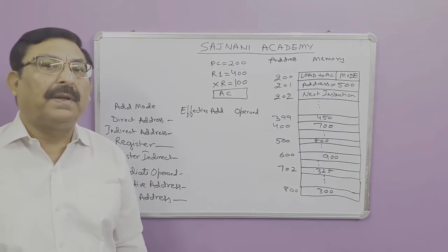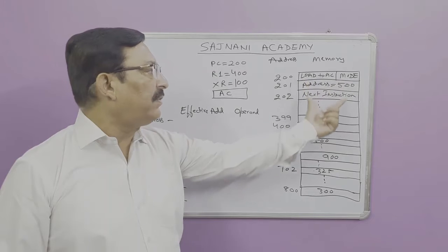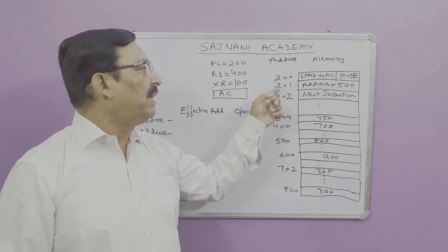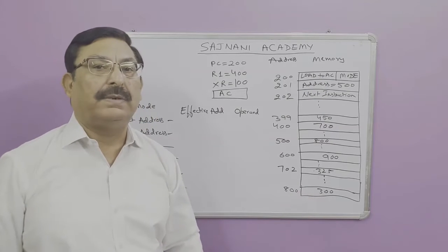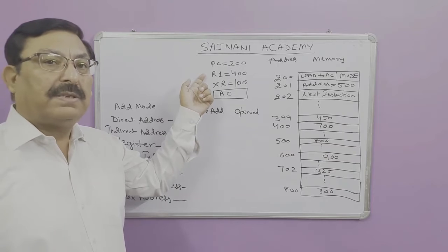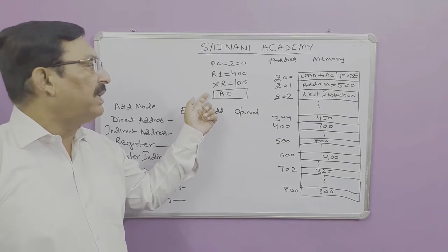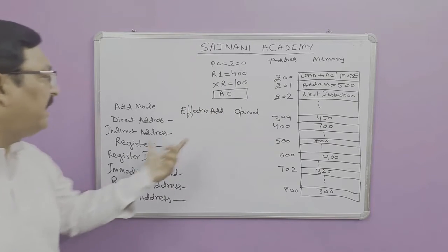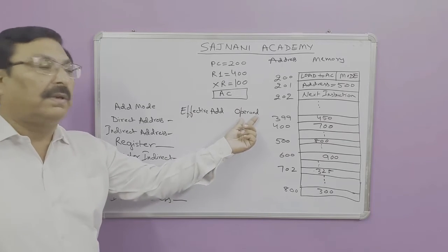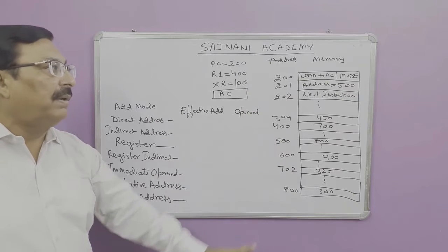Let us continue with this example from the book. You are given a memory map where the contents of each memory location are provided. Corresponding to address 200 there is 'load AC', mode 201 address 500, and similarly all other locations are mentioned. The given register values are: PC is 200, R1 (base register) is 400, XR (index register) is 100, and the accumulator value is also given. We need to find the effective address and the operand for each addressing mode.